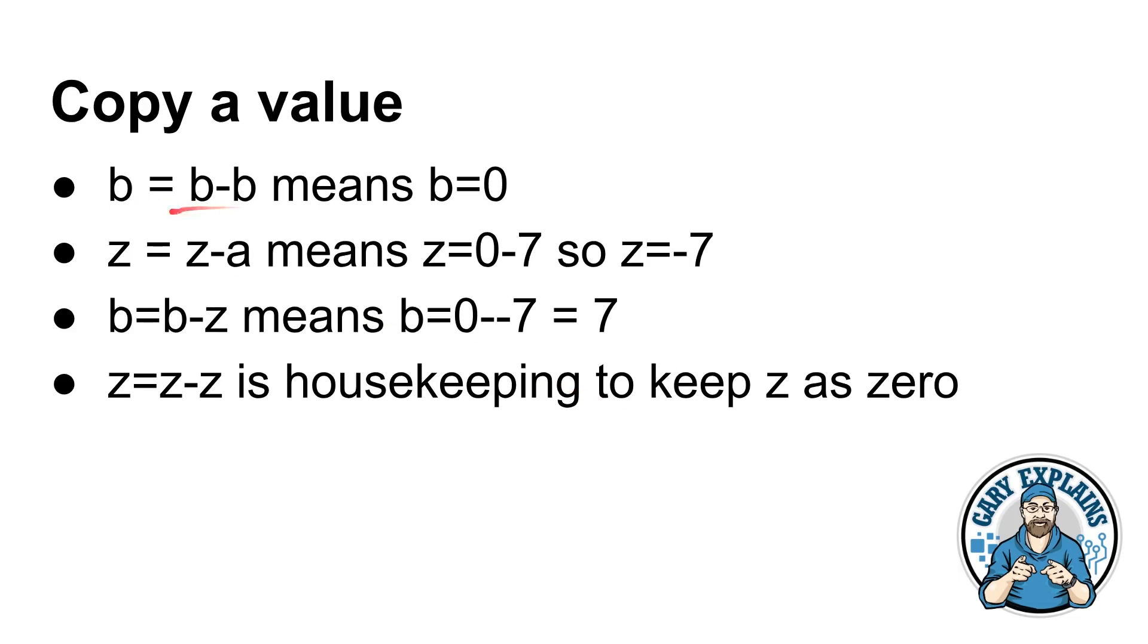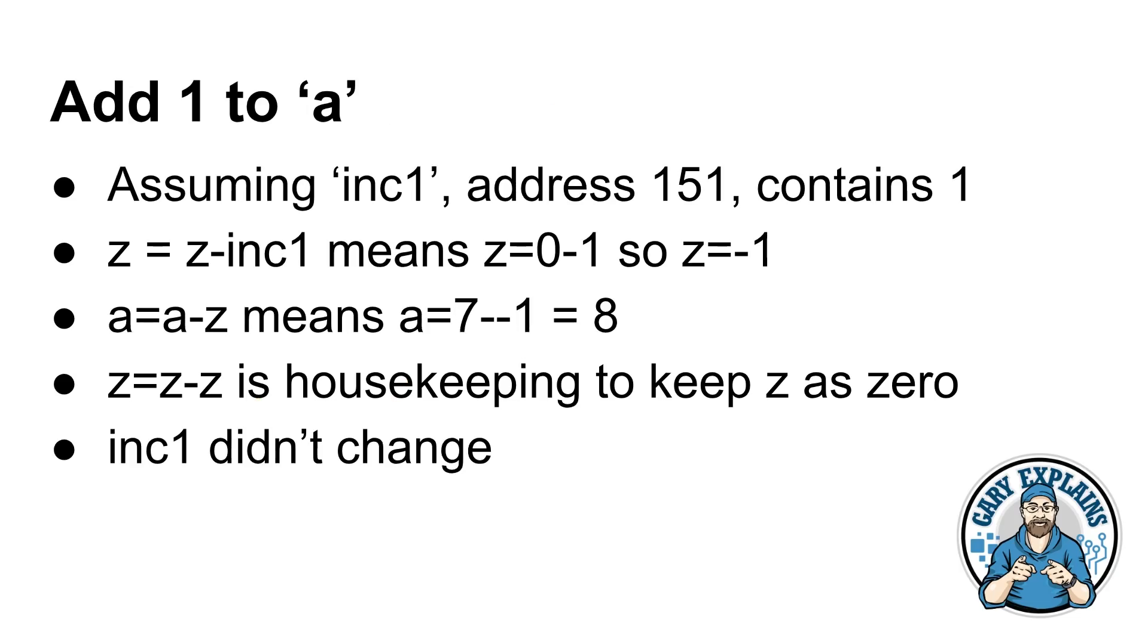If we do B minus B, so B equals B minus B, you're effectively saying that in B, that's address 200, there's now going to be a zero. Here comes a clever part. If we say Z equals Z minus A, that means Z is going to be zero minus the seven that's in A, so you end up with minus seven. Now we can say B equals B minus Z. B is already zero, so you get B equals zero minus Z. What's Z? It's minus seven. So B minus minus seven, now we've got seven in B. By using these three instructions, we were able to go from having seven in A's location to now seven being in B's location. Then for housekeeping, you say Z equals Z minus Z so that Z register always returns to zero.